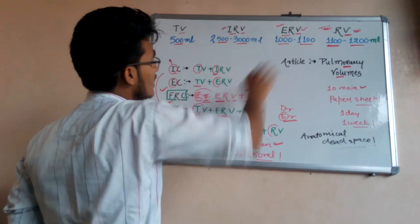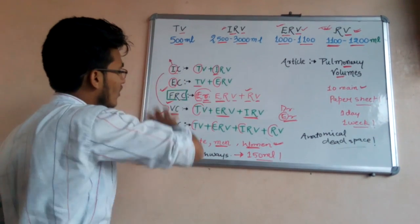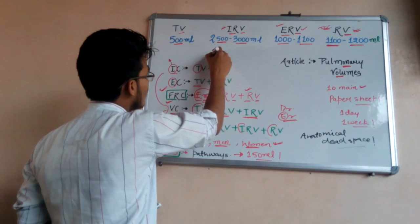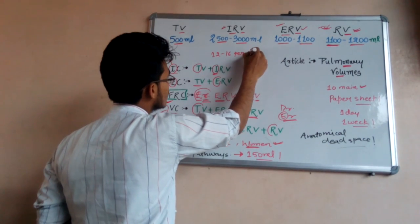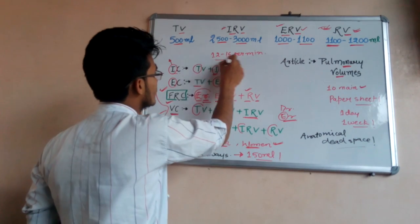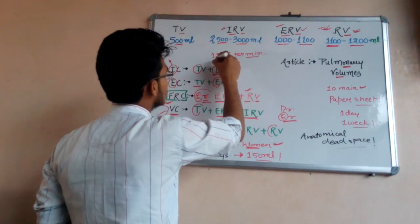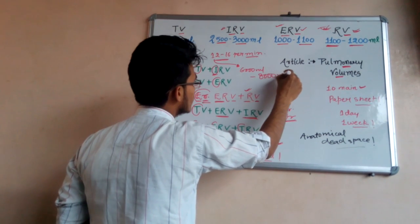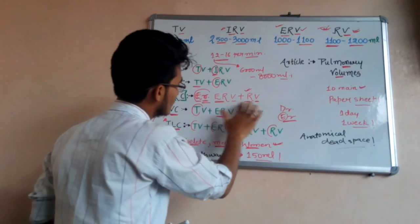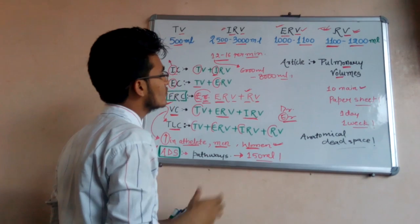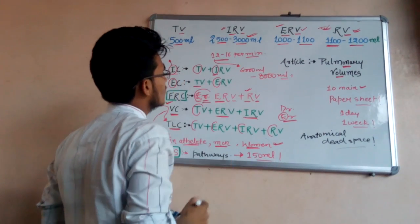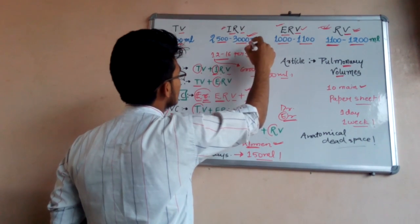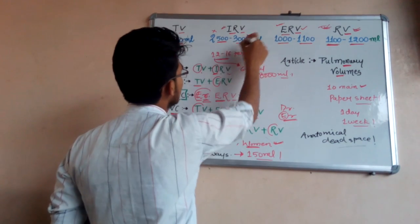So we have covered TV, IRV, ERV, and RV — remember only these four respiratory volumes — and all other formulas can be derived from them. ADS, anatomical dead space, is also very important. The breathing rate of a human being is 12 to 16 breaths per minute. We can calculate the volume of air inspired or expired per minute: 12 × 500 = 6000 ml and 16 × 500 = 8000 ml. When calculating derived volumes, use the maximum value — for example, TV plus IRV would be 500 + 3000 = 3500 ml.